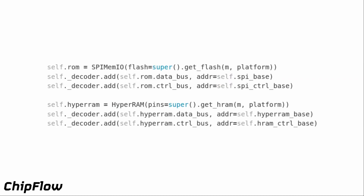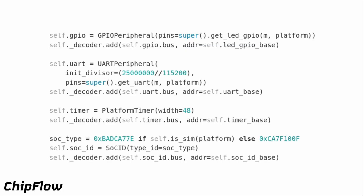Then we add the two memory devices: the ROM, which is the memory-mapped QuadSPI flash with both a data bus for accessing the flash and a control bus for setting up the controller and extra SPI configuration. Similarly, the HyperRAM has its memory-mapped region and control interfaces for configuring latency and control registers. Then we have the SoC peripherals: GPIO added to the bus, a UART with a default divisor, a platform timer for generating the timer interrupts Linux needs, and the SoC ID core which also embeds the git commit hash so you can see which code it was built from.